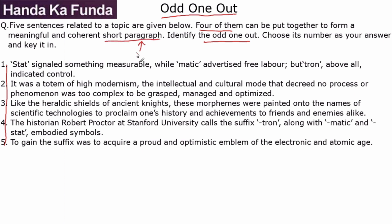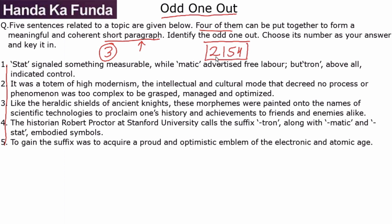Although the question does not require you to give the order of sentences that form the paragraph, I do recommend that as a habit, whenever you do questions like this, please try and figure out what that paragraph would be. For example, if you believe sentence three is the odd one out, that is enough — but try to also determine that the order might be 2-1-5-4, as that will help you in para jumbles questions.